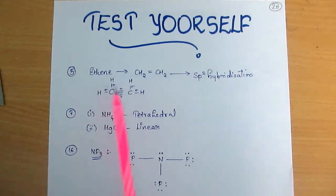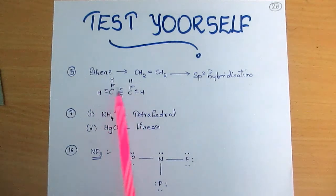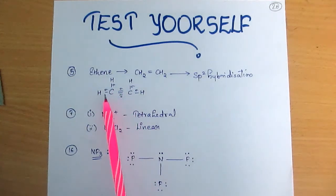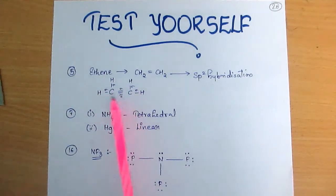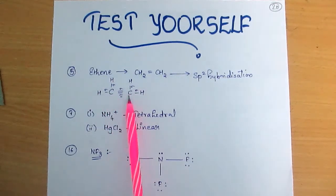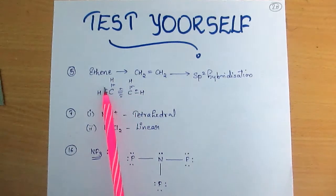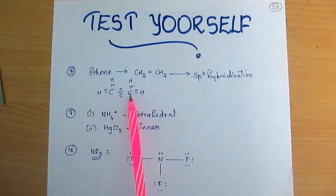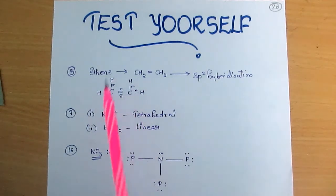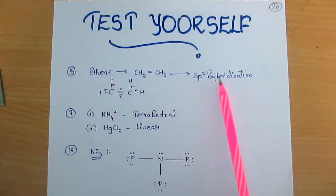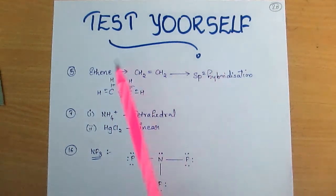The question also asks how many sigma bonds and how many pi bonds are present. The answer is 5 sigma bonds and 1 pi bond. So this confirms sp2 hybridization.